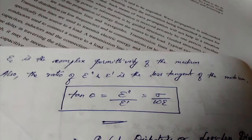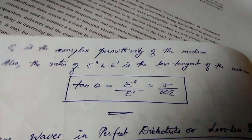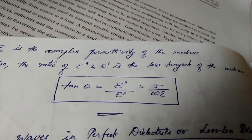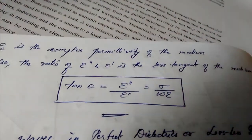And epsilon C is the complex permittivity of the medium. Tan theta will be the ratio of the imaginary part epsilon double dash by epsilon dash, or sigma by omega epsilon.